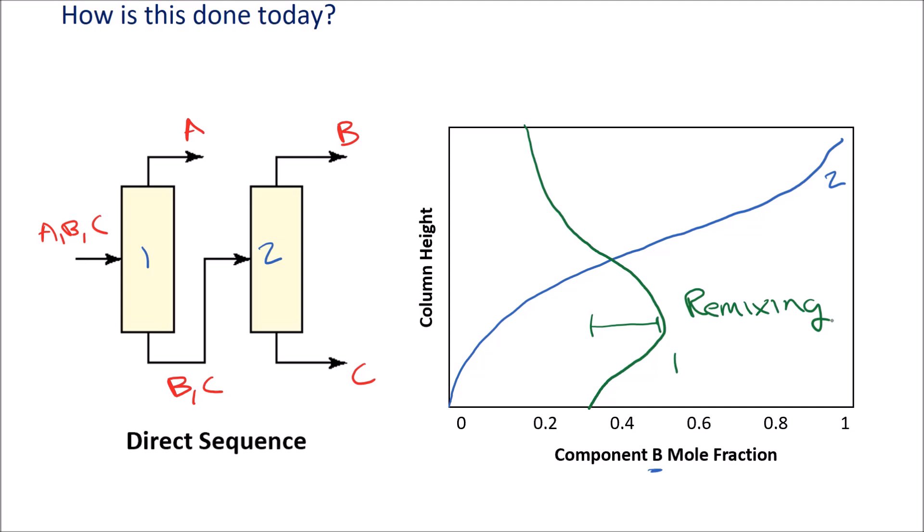Now you might be asking, what about adding a side cut off of the first column here to try and take advantage of that? There are some applications when you can do that, but not when you require very crisp separation of each of the three components, because you will have some of your feed stream bleeding through into that side cut.